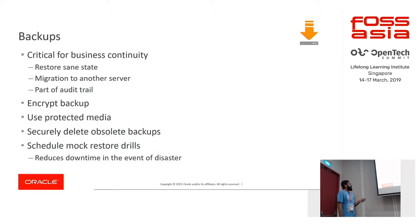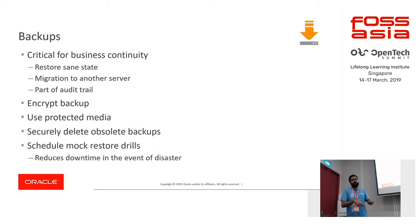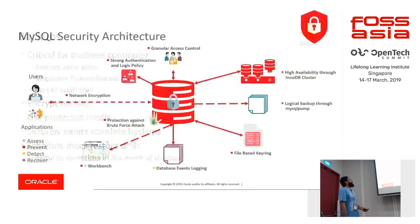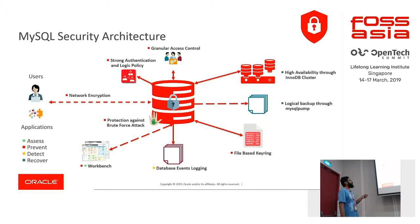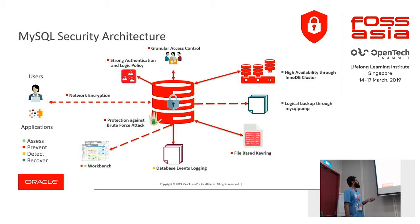Schedule regular restore drills. This will help you manage downtime — if your DBAs are used to restoring the database to a sane state regularly, in an actual disaster event they will take less time to bring the server back online. To conclude, the security architecture of MySQL for the community version includes network encryption, strong authentication and login policies, fine-grained access control, and database event logging. On the enterprise version, you additionally have the firewall, enterprise authentication, enterprise audit, keyring, and enterprise monitor.